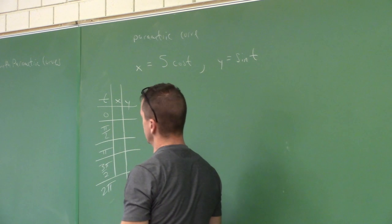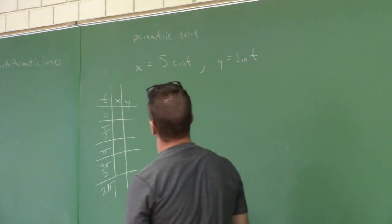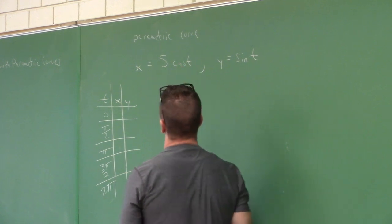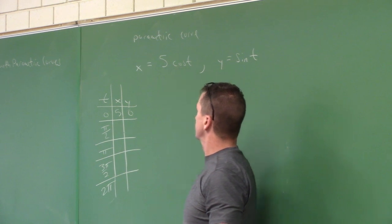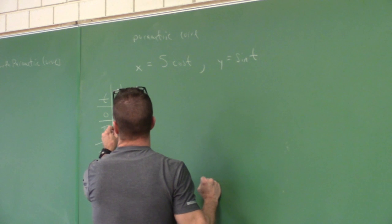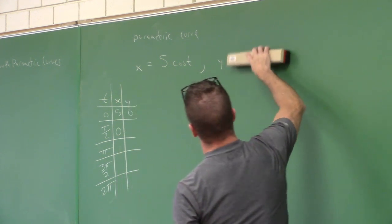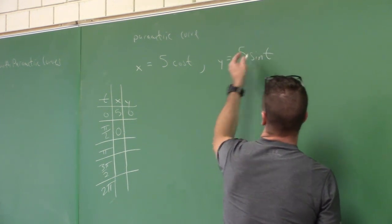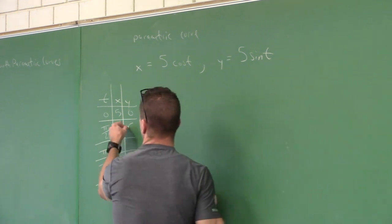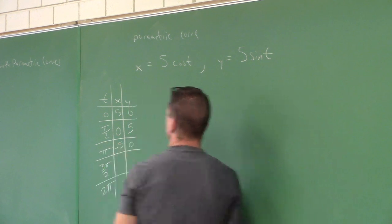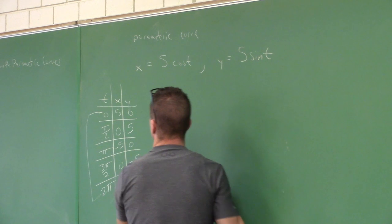We'll sketch the curve and put an arrow to indicate the path as t increases. At t equals zero, sine of zero is zero, so we get the point (5, 0). At pi over 2 we get (0, 5). I'll put a five in front of sine as well, just to see how coefficients affect things. At pi we get (-5, 0), at 3pi/2 we get (0, -5), and at 2pi we're back to (5, 0).